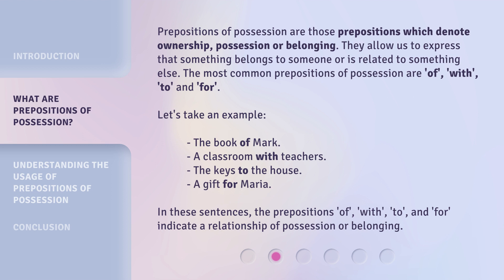Let's take an example. The book of Mark. A classroom with teachers. The keys to the house. A gift for Maria. In these sentences, the prepositions of, with, to, and for indicate a relationship of possession or belonging.